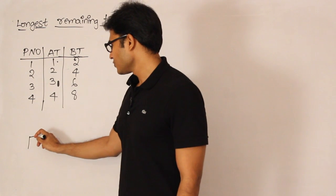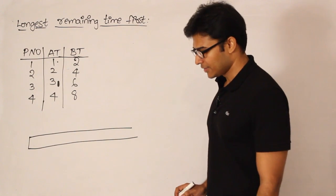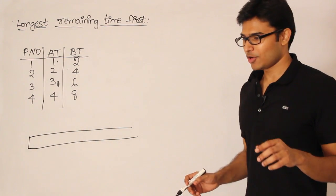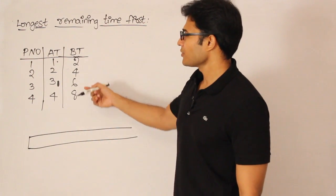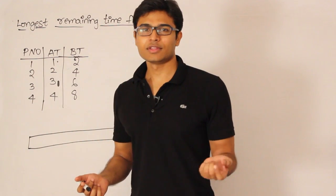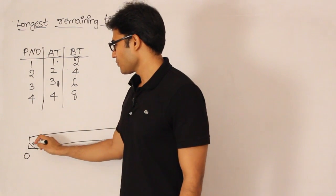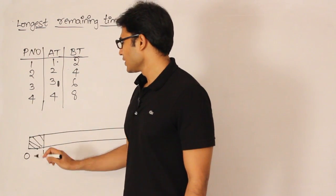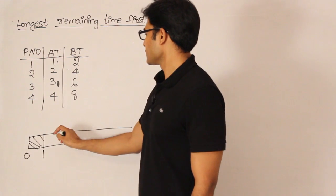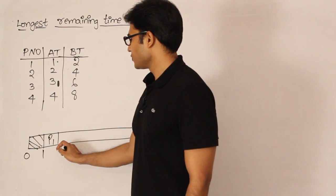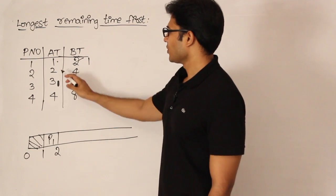You should be careful about the details: keep track of what processes are available, their burst times, and their arrival times. Whenever two processes have the same burst time, pick the one with the lowest arrival time. Even though we start the Gantt chart at zero, we don't schedule anything till time 1, which is the earliest arrival time. So we take process P1 and run it for one unit, until time 2, and its burst time becomes 1.